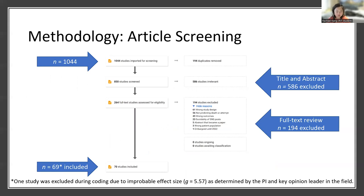However, during data extraction, it was noted that there was one article that reported an effect size of Hedges' G equal to 5.57. After consulting with a key opinion leader in the field, it was decided that this effect size, when taking into account the other effect sizes in the rest of the data, was improbable. Because of this, the article was excluded from the final analysis, bringing the total number of articles included to 69.